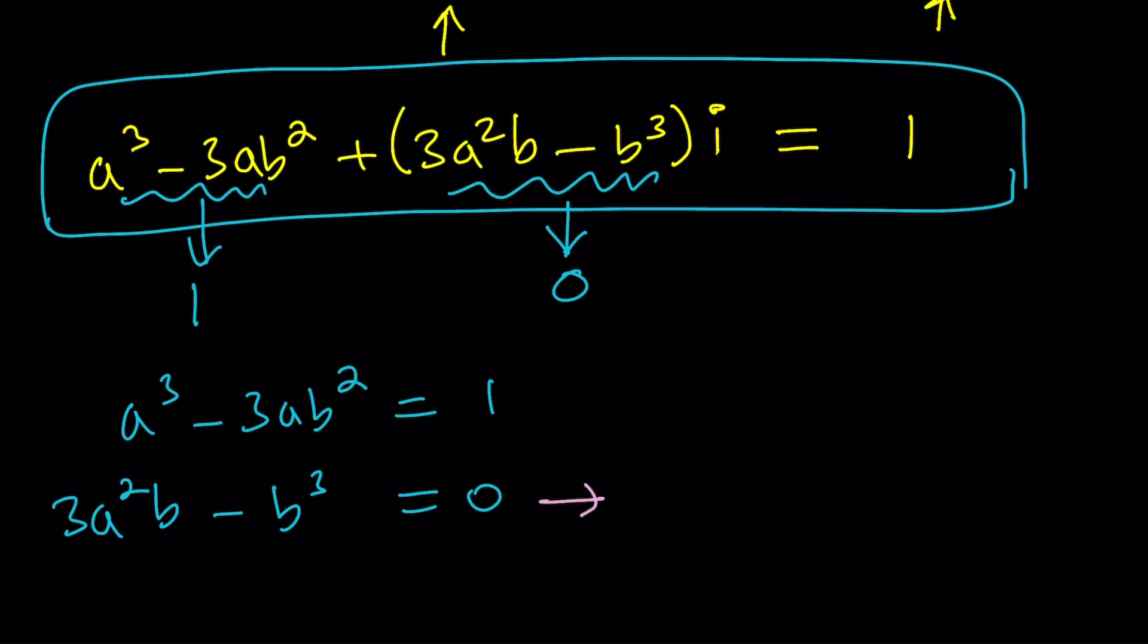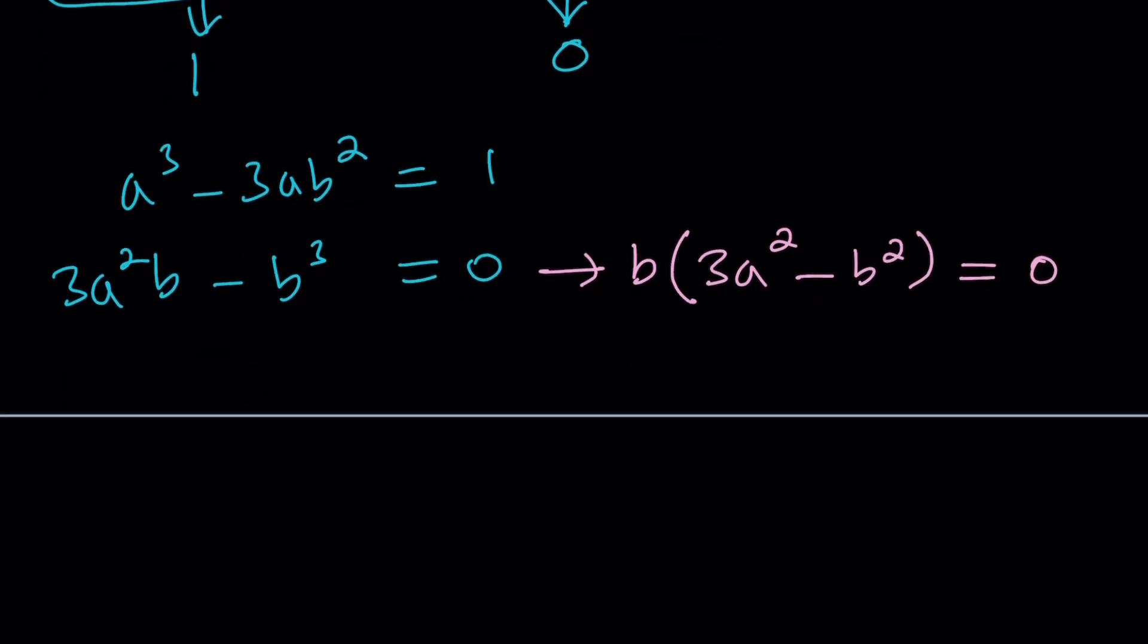Here's what we're going to do. We're going to factor out a b here. That's going to give us b times 3a squared minus b squared equals 0. Having 0 is beautiful, because now we can use 0 product property, which means either b is 0 or this is 0.